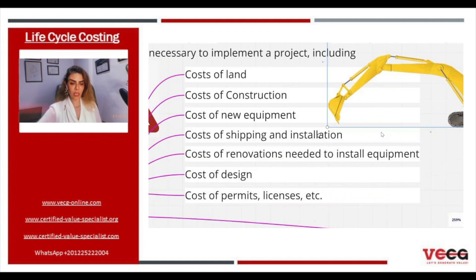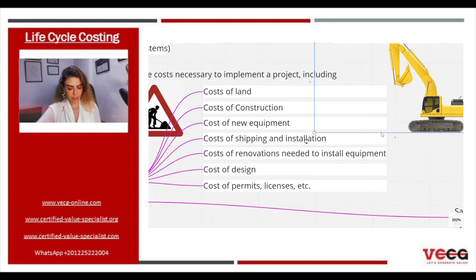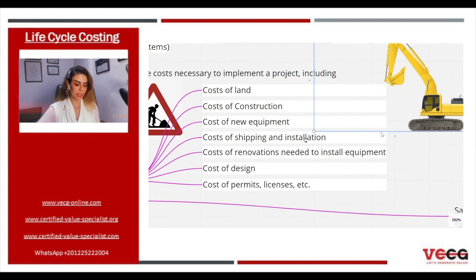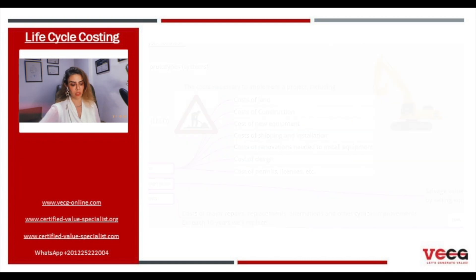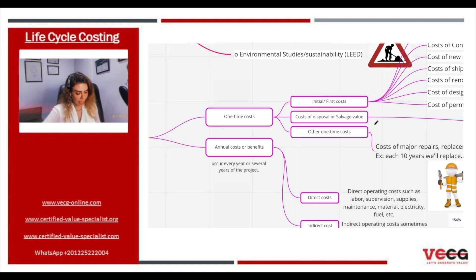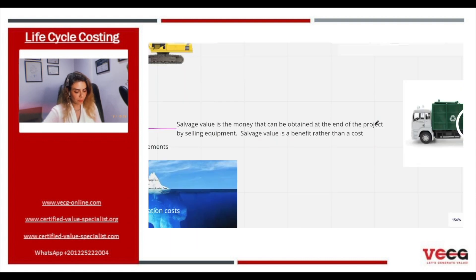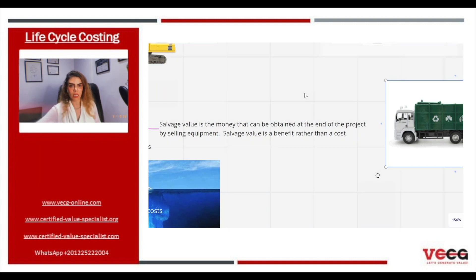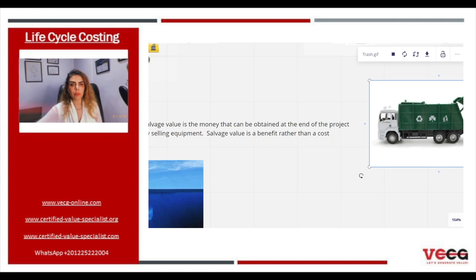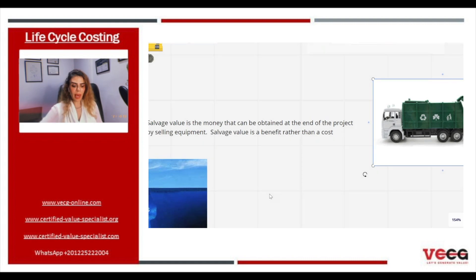Initial cost includes the cost of land, construction, new equipment, shipping and installation, renovation needed to install equipment, design, permits, licenses and so on. The second type of one-time cost is the cost of disposal or salvage value. Salvage value is the money that can be obtained at the end of the project by selling equipment, so salvage value is a benefit rather than a cost. At the end of the life cycle, you may need to pay for disposal or gain money from selling equipment.